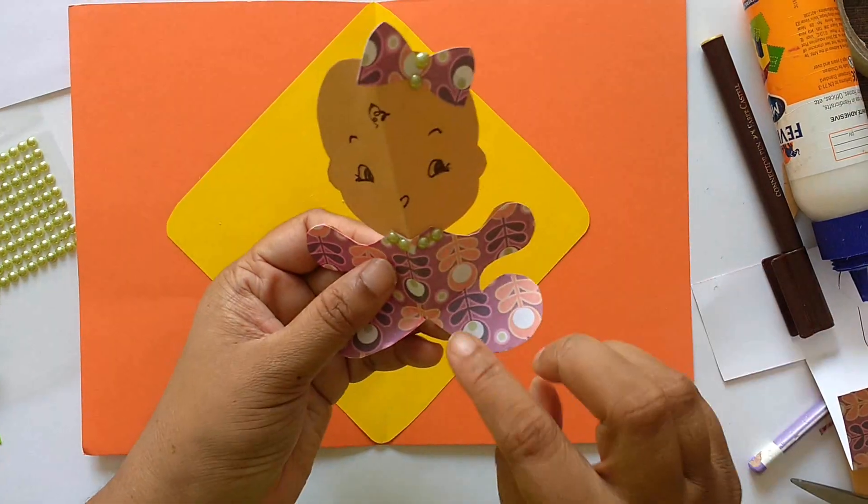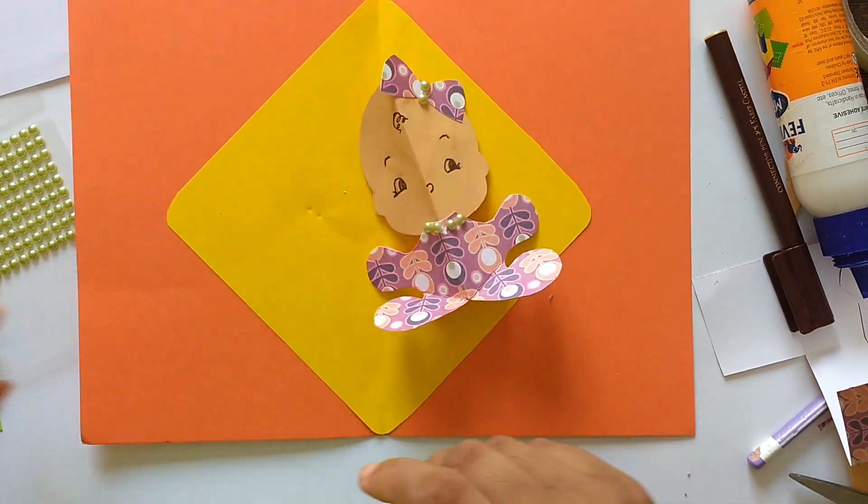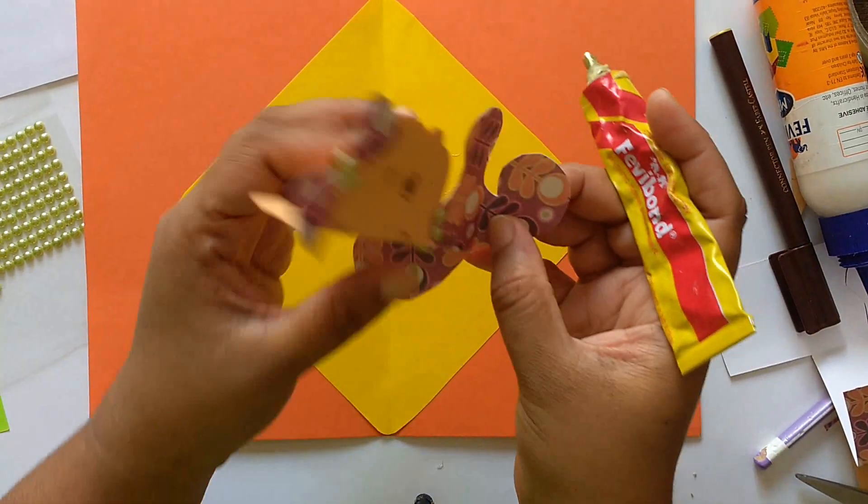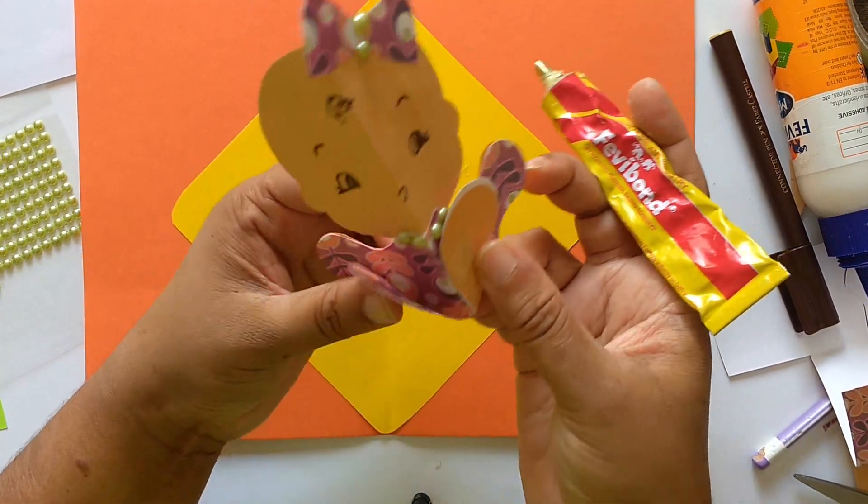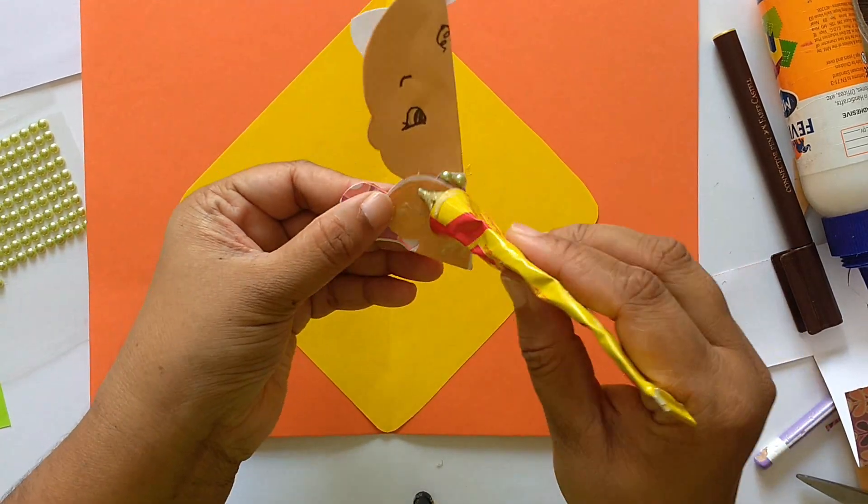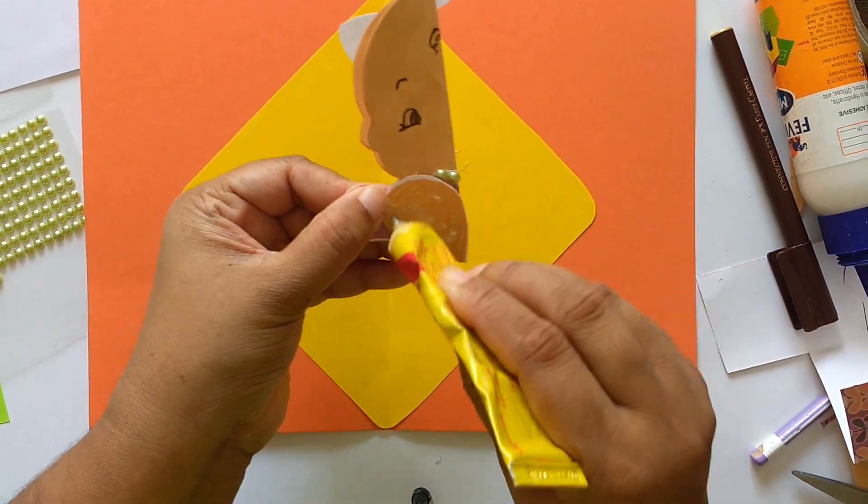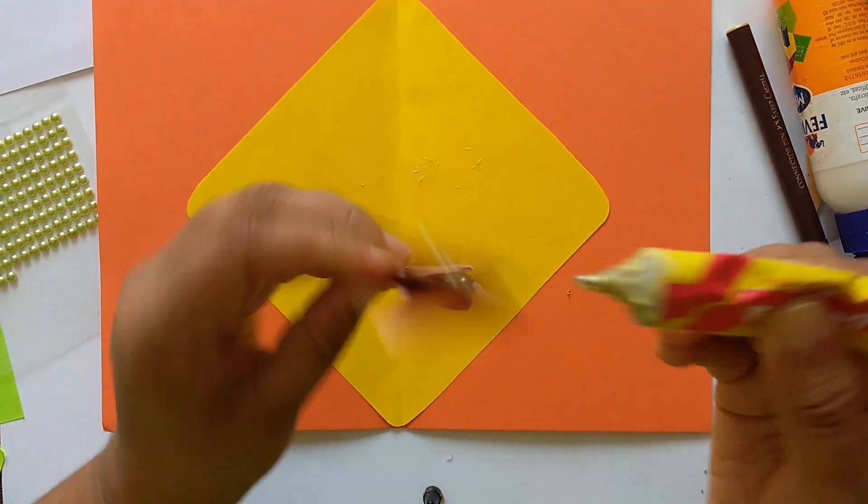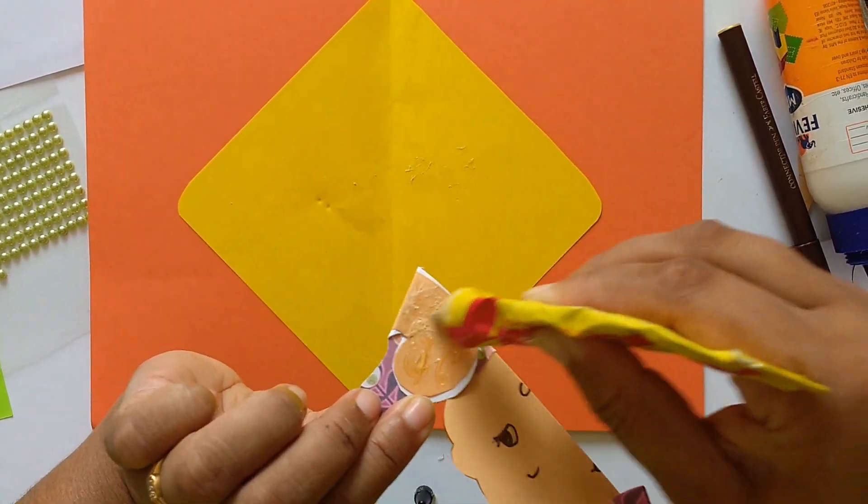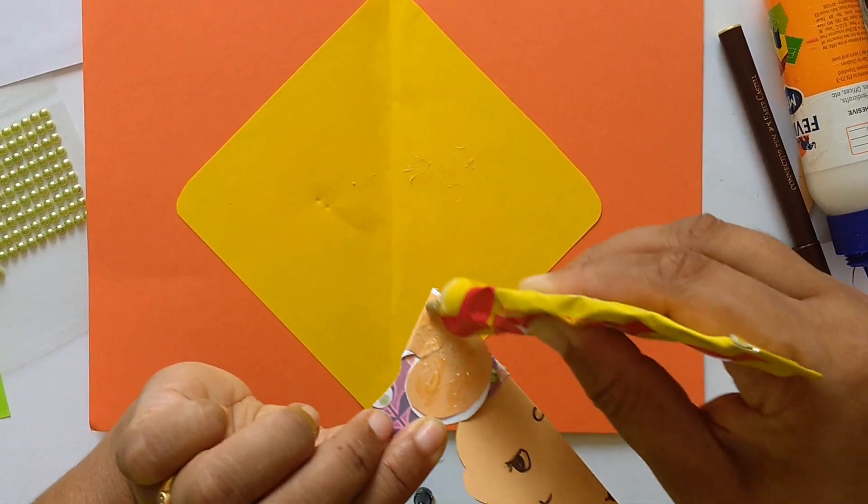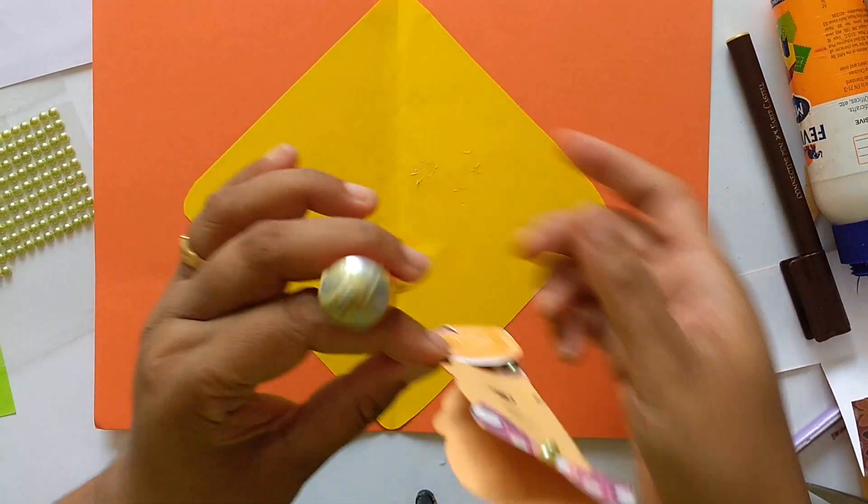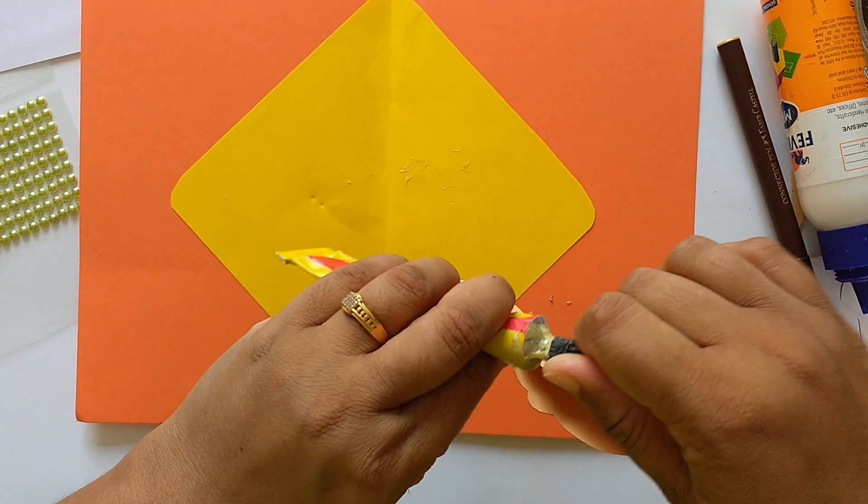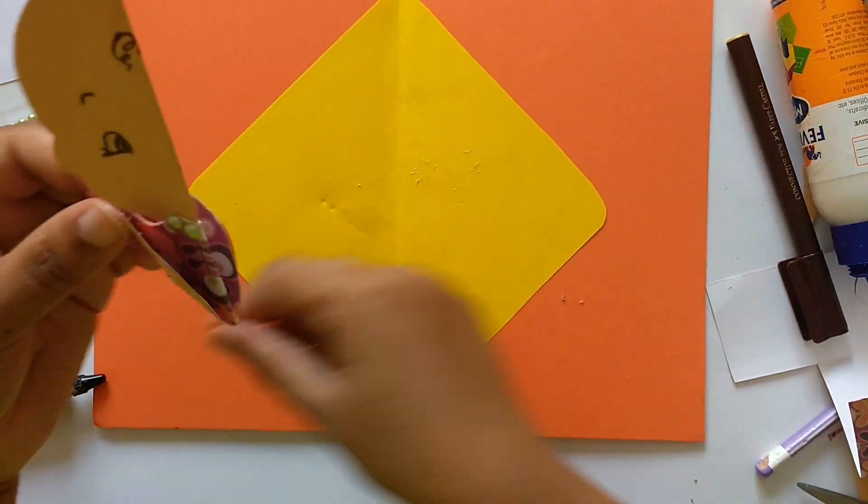Now we have to stick this baby. So apply the glue on the legs of your baby. Don't use a water-based glue, use either a sticky tape or double-sided tape.